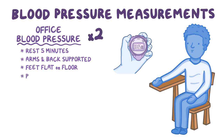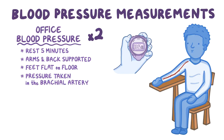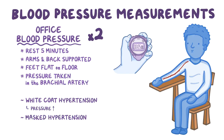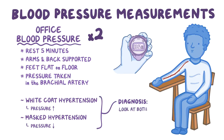Most of the time, blood pressure is taken in the brachial artery in the upper arm, because if the pressure is high there, it's probably high throughout the arteries. Keep in mind that just being in the office can cause blood pressure to change. In white coat hypertension, a person's blood pressure rises, and in masked hypertension, a person's blood pressure falls. So the diagnosis of hypertension should be done by looking at both office and out-of-office blood pressure measurements.